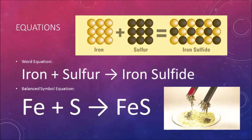The word equation for this reaction is iron reacts with sulfur to yield iron sulfide. The balanced symbol equation informs us that one mole of iron will react with one mole of sulfur to yield one mole of iron sulfide. Fe + S → FeS.